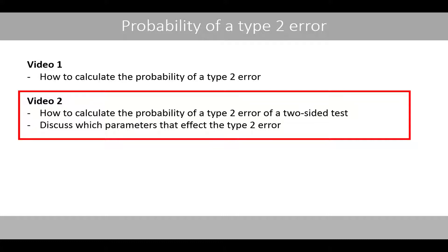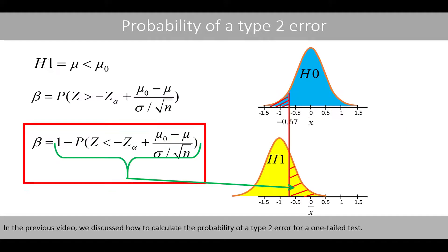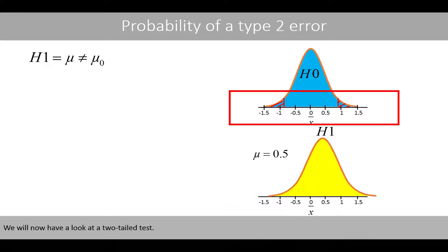We'll also discuss which parameters affect the type 2 error. In the previous video, we discussed how to calculate the probability of a type 2 error for a one-tailed test. We'll now have a look at the two-tailed test.